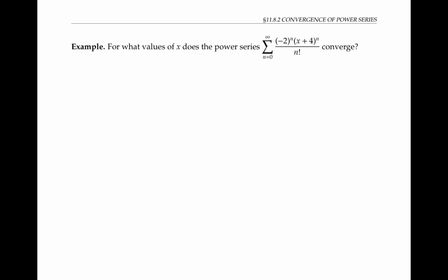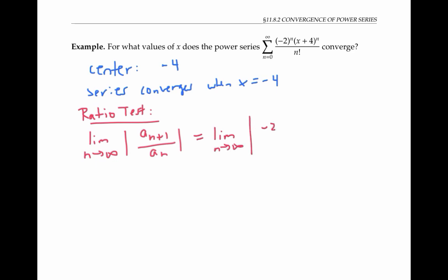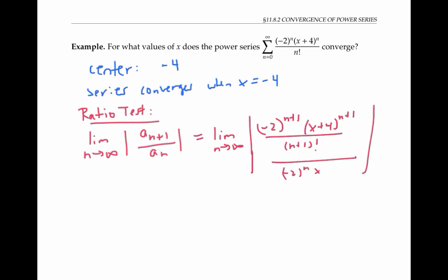In this next example, the center of the series is negative four, so the series definitely converges when x equals negative four. Let's use the ratio test to figure out what other values of x make it converge. We'll take the limit as n goes to infinity of the absolute value of a_(n+1) over a_n. This works out to the limit of the absolute value of (−2)^(n+1) times (x+4)^(n+1) divided by (n+1)!, all over (−2)^n times (x+4)^n over n!.